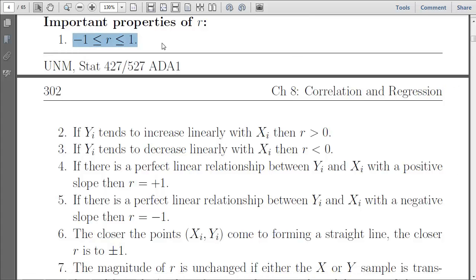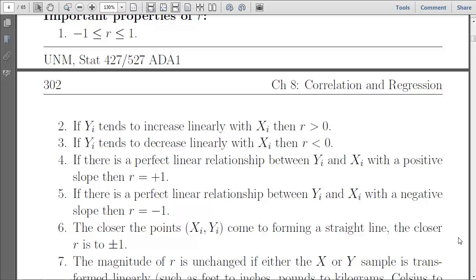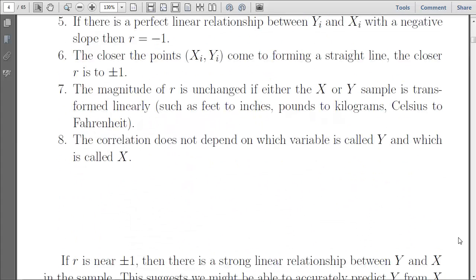Let me page back up. We'll go through some of the properties of correlation. Firstly, it's bounded between negative 1 and positive 1. And correlation can be positive or negative depending on that slope. Perfect relationships are described at plus 1 and minus 1 for the correlation value. And the closer the points are to forming a straight line, the closer the correlation is to plus or minus 1.